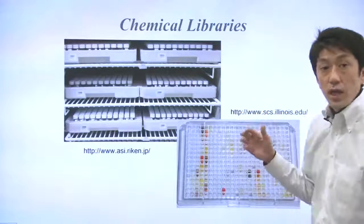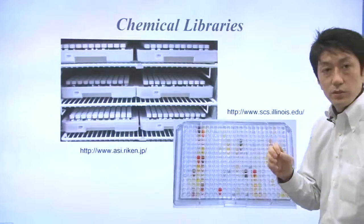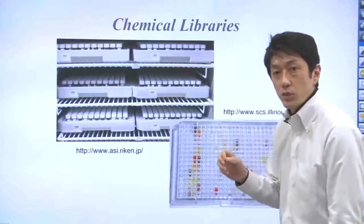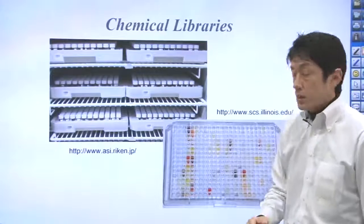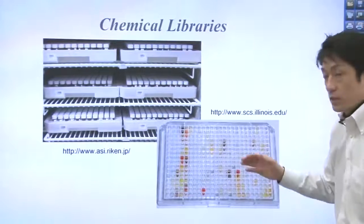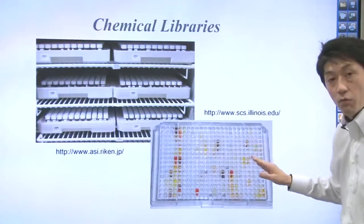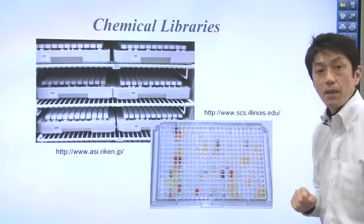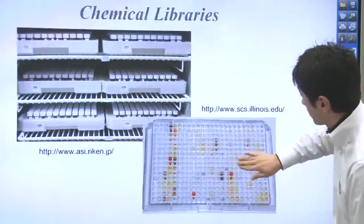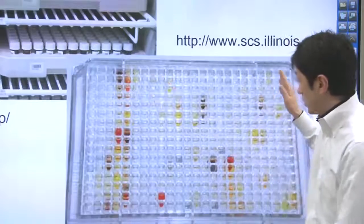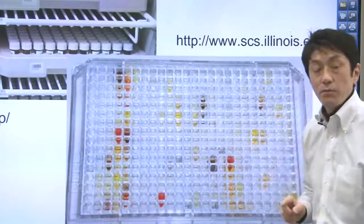This slide shows how chemical libraries look. The powders of chemicals can be stored in glass bottles. Or the solution of the chemicals can be arrayed into 384-well plates. You can see the plates here. There are many wells on the plate. Each well has different compounds.